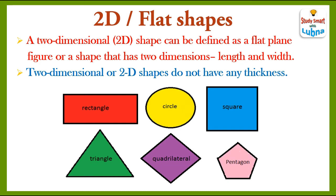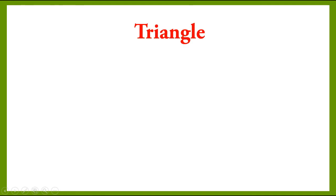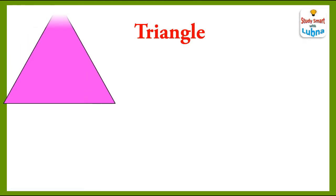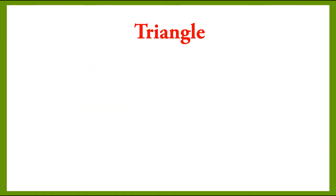These are some examples of 2D shapes: rectangle, circle, square, triangle, quadrilateral, pentagon. Now we are going to discuss different 2D shapes in detail.